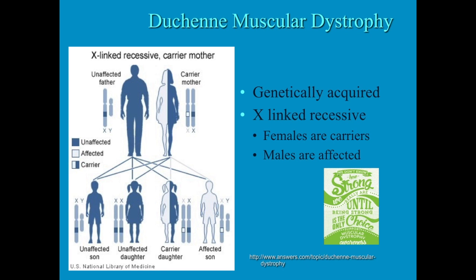The Duchenne type — actually all the types — are X-linked, but the Duchenne type is X-linked recessive. Females are carriers and males are affected. You can see the Mendelian split: the mom is the carrier, dad isn't affected, one male child is completely unaffected, one daughter is not affected, one daughter becomes a carrier for the next generation, and one son is affected by the gene.